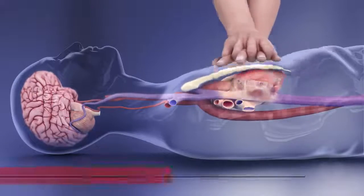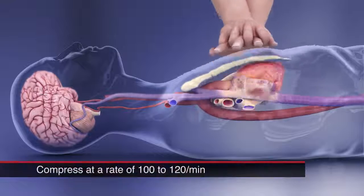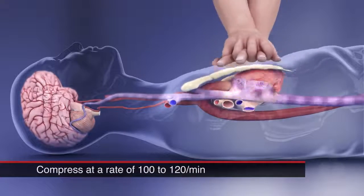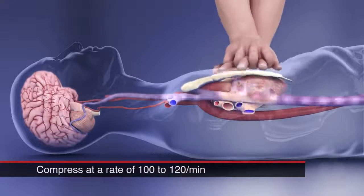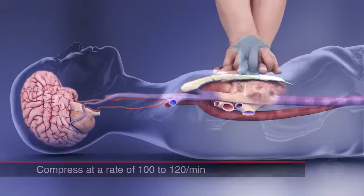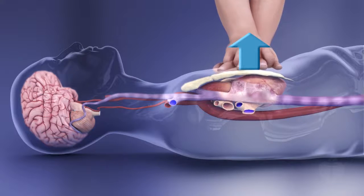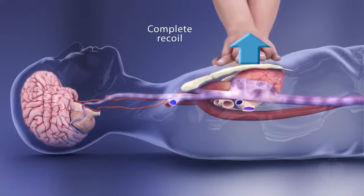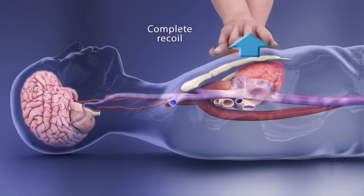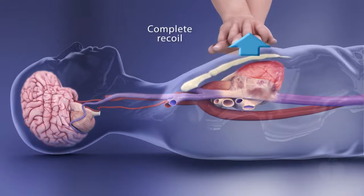Adequate compression rate: it's important to push fast by compressing at a rate of 100 to 120 compressions per minute, allowing complete chest recoil between compressions.